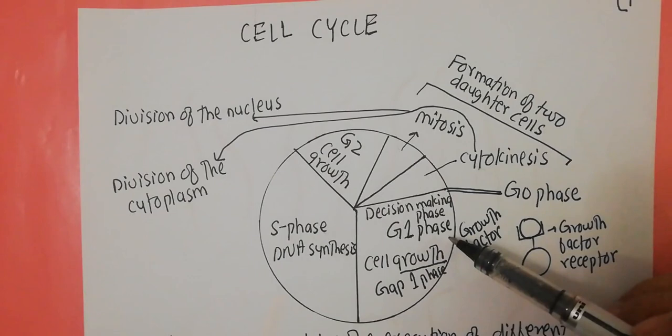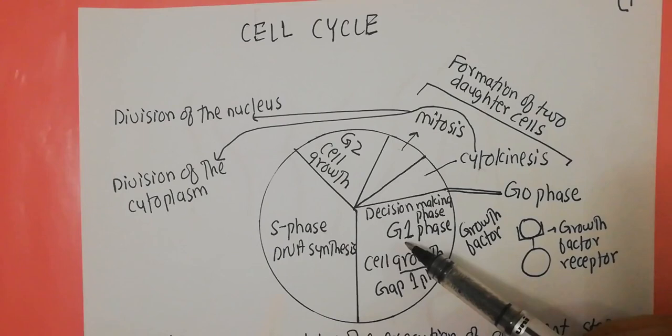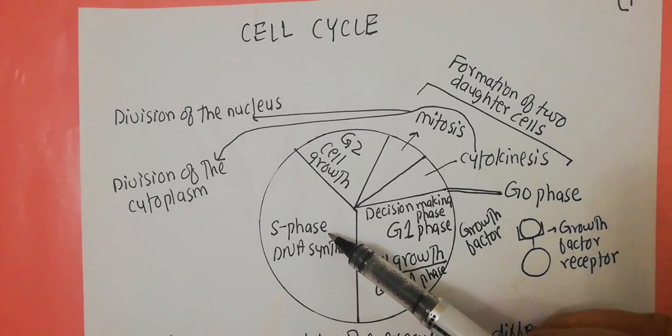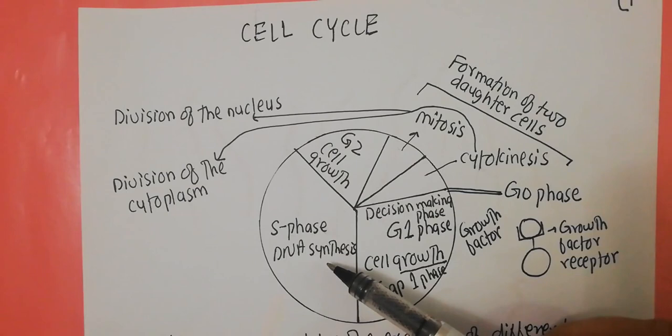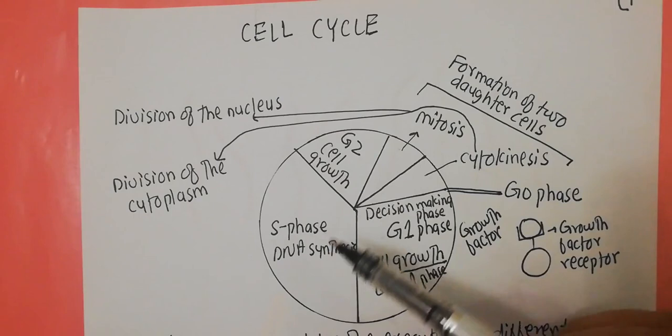When growth factors are available and bind to their receptors, the cell usually moves from the G1 phase into the S phase of the cell cycle. In the S phase there is synthesis of the DNA. Of course, if you are making two cells from one, you have to duplicate and replicate the DNA. It is during the S phase that this synthesis or replication of DNA takes place.